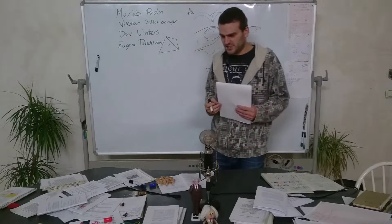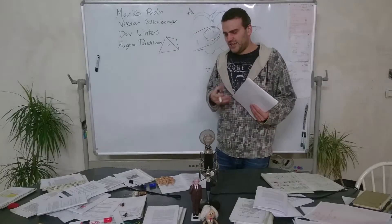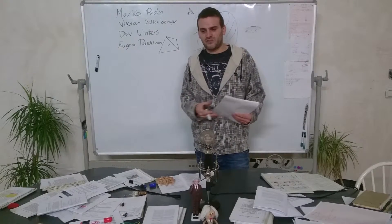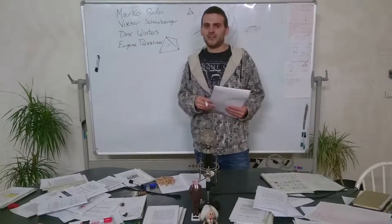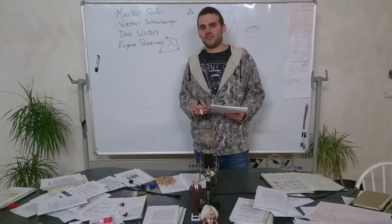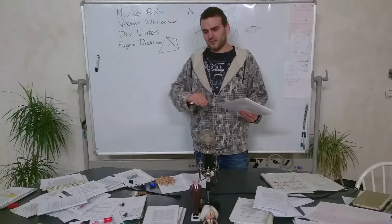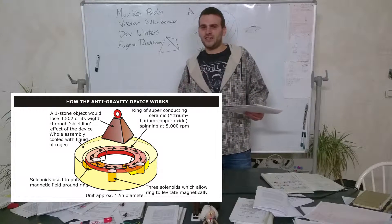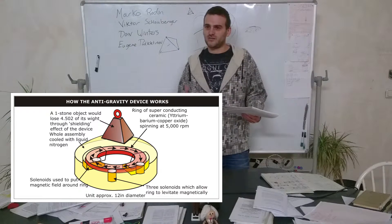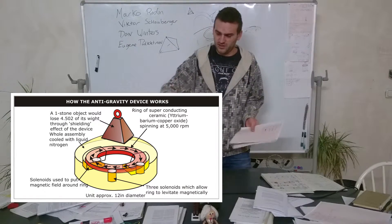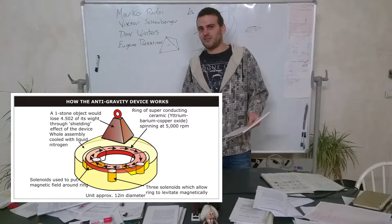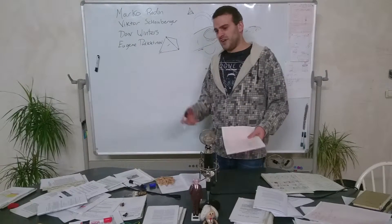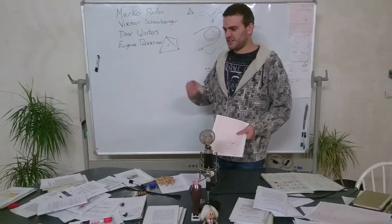Eugene Podkletnov was one of the first physicists that had a superconductor floating on top of an electromagnetic field that was alternating, having a superconductor flying on top of it. And whenever he had a rotational acceleration on the superconducting plate - so you rotate it, not when it's constantly rotating, but when you accelerate it or decelerate it - you measure a weight difference on top of it.